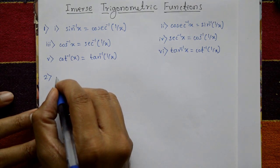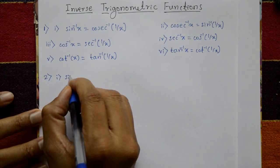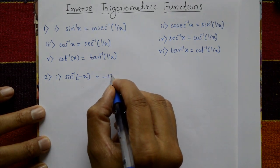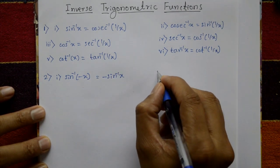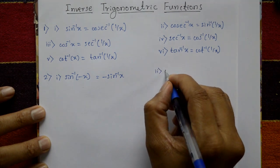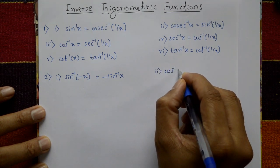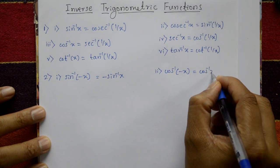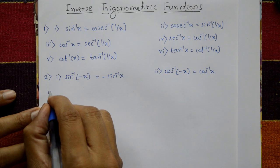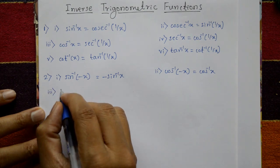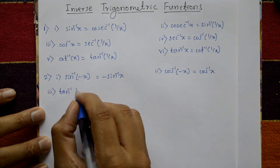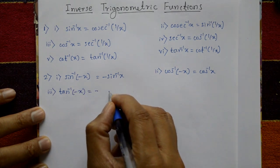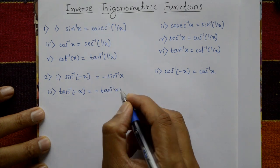Second set of formulas. First: sine inverse of minus x is equal to minus sine inverse x. Second: cos inverse of minus x is equal to pi plus cos inverse of x. Third: tan inverse of minus x is equal to minus tan inverse x.